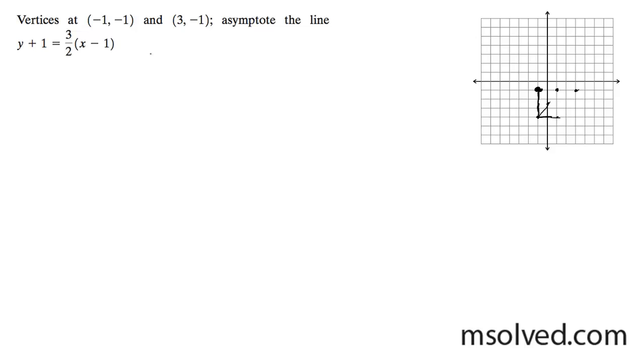So one of my asymptote lines is this. So I'm going to go ahead and do y plus 1, and I'm going to distribute this across. So 3 halves x minus 3 halves, and then y is equal to 3 halves x minus 5 over 2.